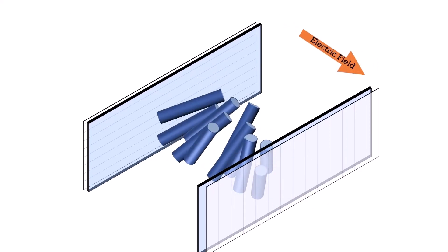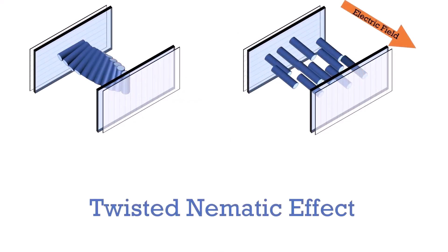But by controlling the amount of voltage in our electric field, we can control the amount our crystals align, and therefore the amount of light that gets vertically polarized. We have just showcased the twisted pneumatic effect, which is one way LCDs control their pixel intensity.